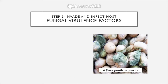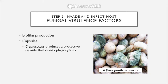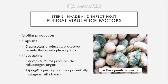Briefly, fungal virulence factors include biofilm production and capsules — for example, Cryptococcus produces a protective capsule that resists phagocytosis. We also have mycotoxins, which are fungal toxins. Claviceps purpurea produces the hallucinogen ergot, which is lysergic acid. Aspergillus flavus produces the potentially mutagenic aflatoxin, which can cause your DNA to mutate by changing the sequence of your nucleic acids.